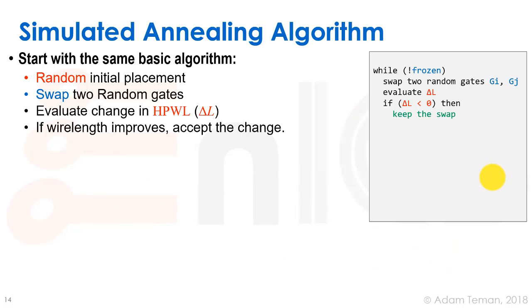We'll start with the same basic algorithm. We do a random initial placement, we swap two random gates, we evaluate the change in half perimeter wire length, and if the wire length improves, we accept the change. So this is what we're doing in this part of the algorithm.